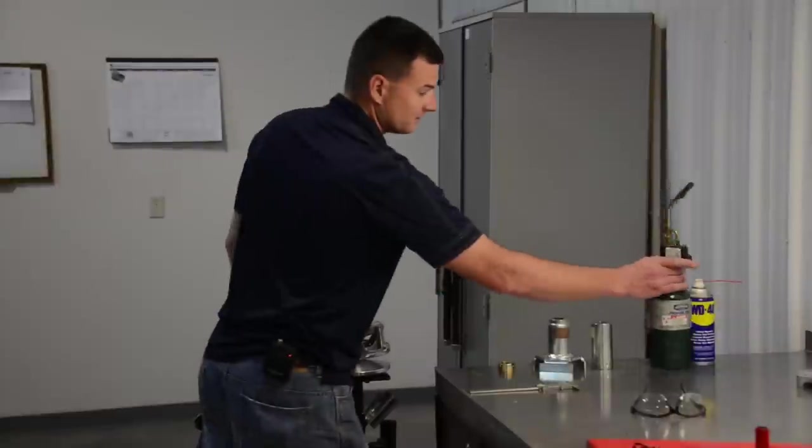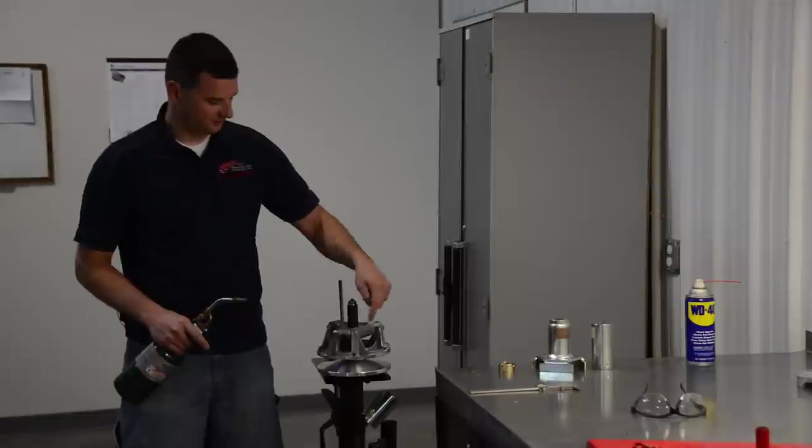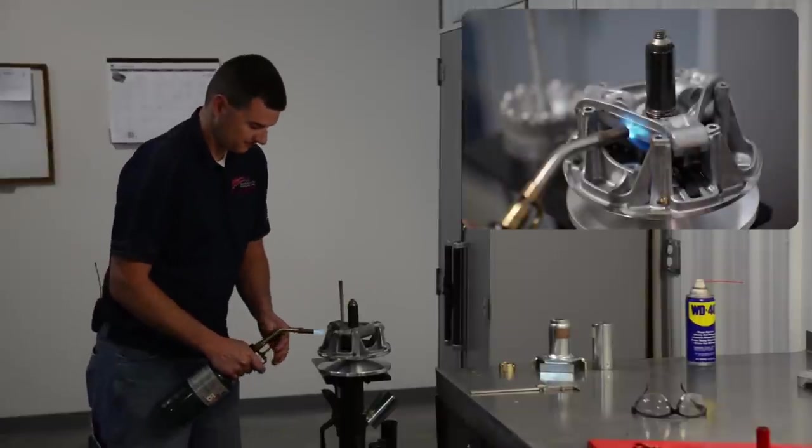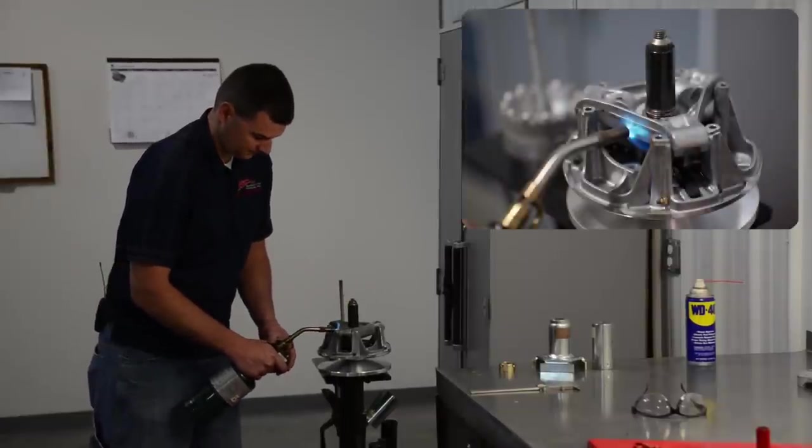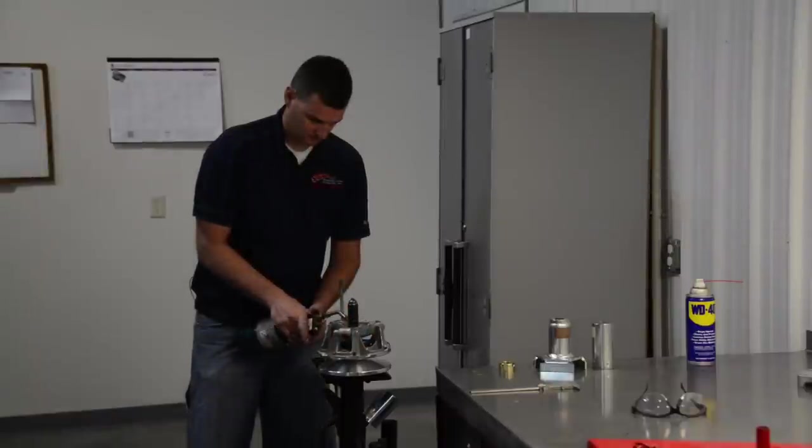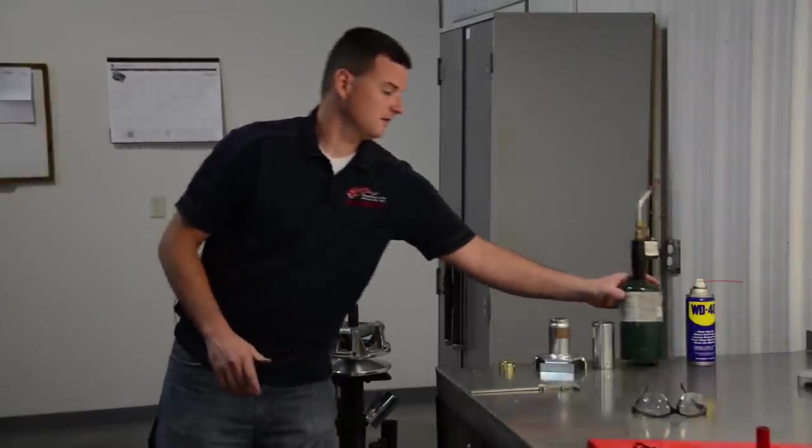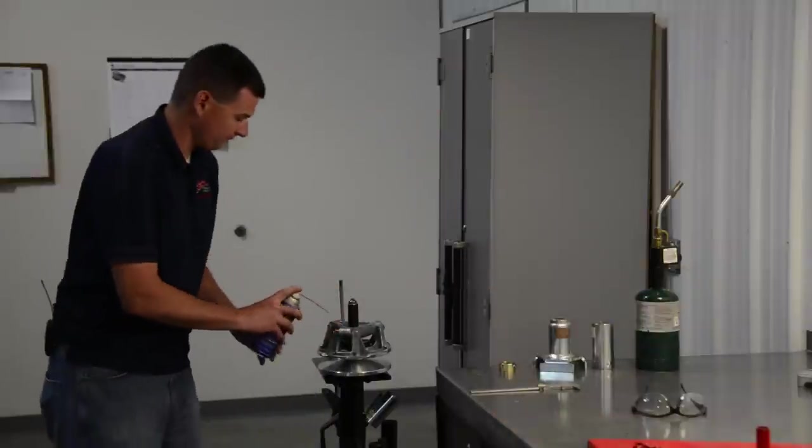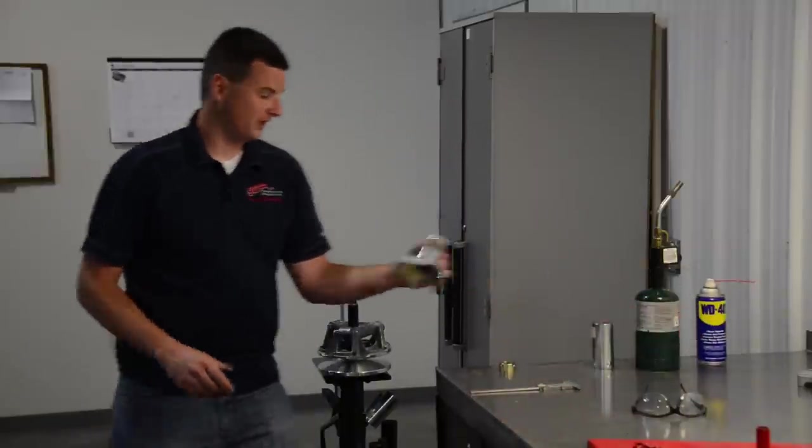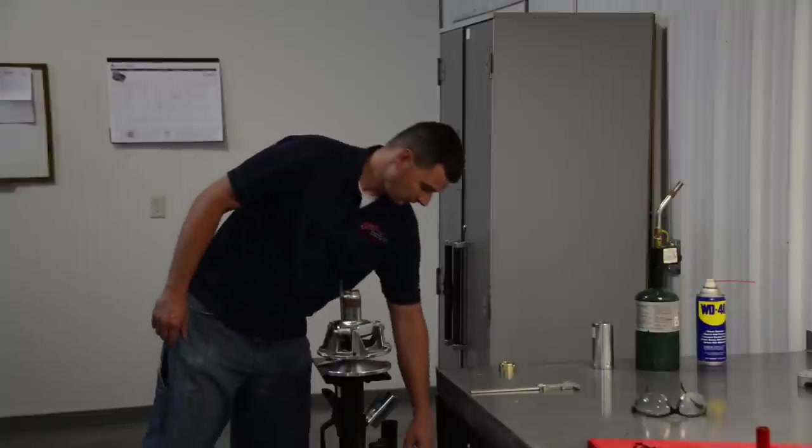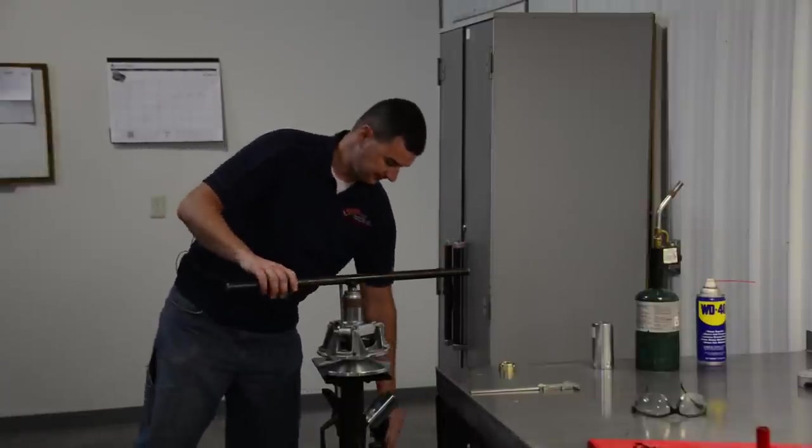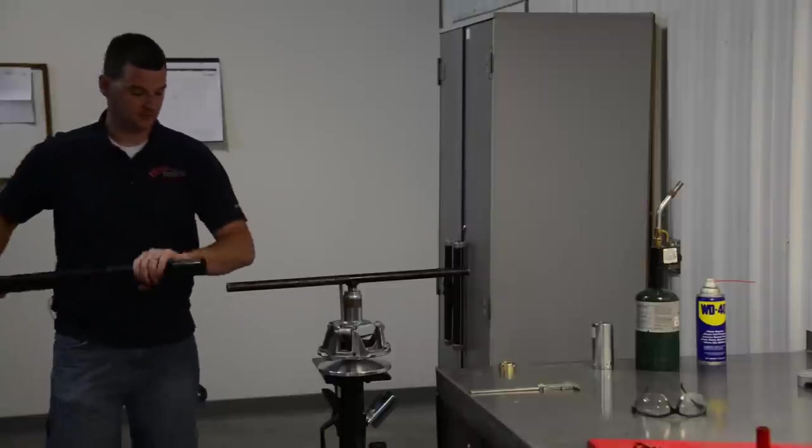Now we'll go ahead and apply heat to the spider. We'll try to do it evenly on all three sides. We'll apply heat for 30 to 45 seconds. After applying the heat, we'll add a little bit of lubrication for the threads. We'll use our spider removal tool, our solid bar, and our cheater pipe to help us get the spider loose.